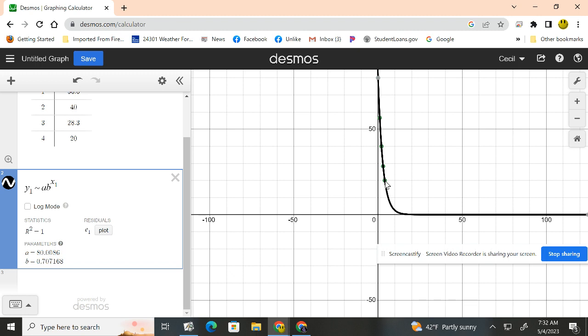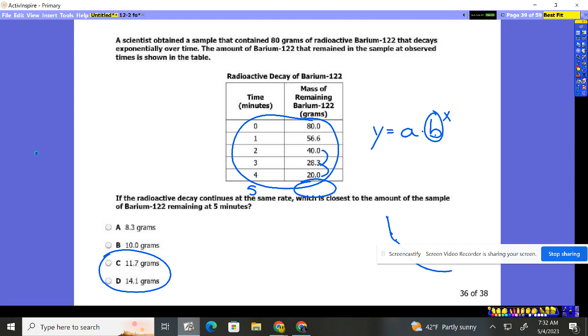So now we know A is 80, B is 0.707. So we could come back, A was 80 and B was 0.707 to the X. And we want to know 5, so just plug 5 in there and you get your answer.